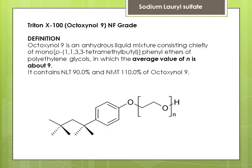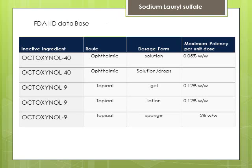Triton X100 is a compendial excipient — that is, it has a USP NF monograph — and it goes by the name of octoxinol 9. In the FDA IID database, octoxinol 9 is mentioned three times, along with another grade of octoxinol which is octoxinol 40. These two excipients are used in approved products such as ophthalmic solutions.